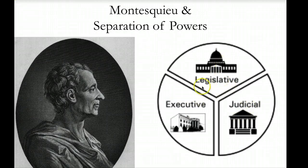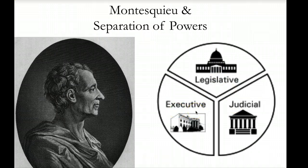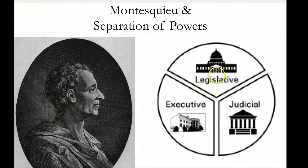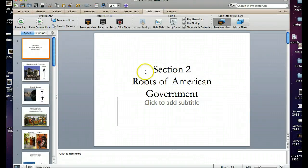Basically, no one branch can perform any action without the other two. This is important because when you put power in one person's hands, they can literally do whatever they choose. In this case, you always have other branches watching each other so they can stop anyone from committing acts of tyranny. This concludes the Section 2 presentation — you can move on to the activities and the check for understanding quiz.